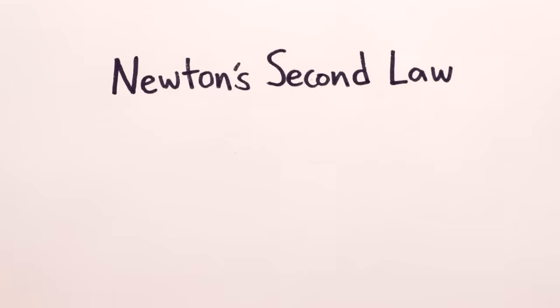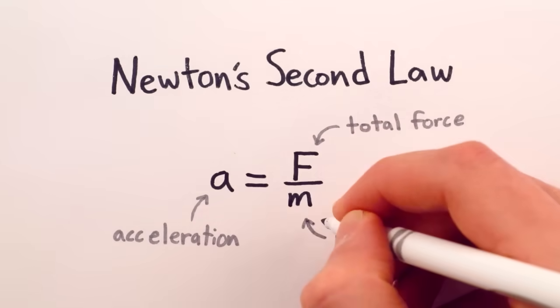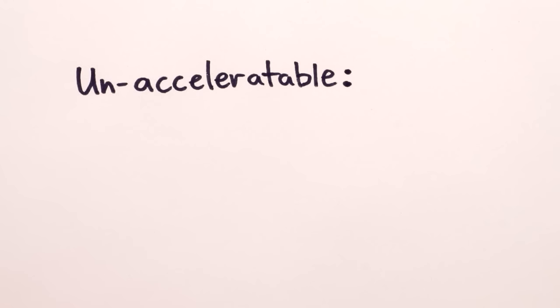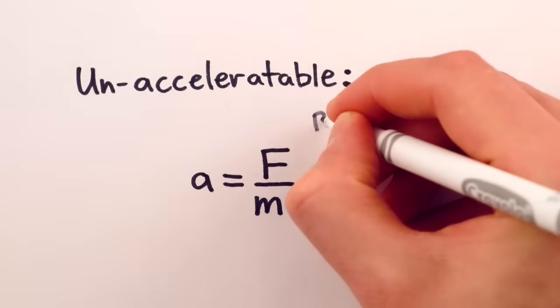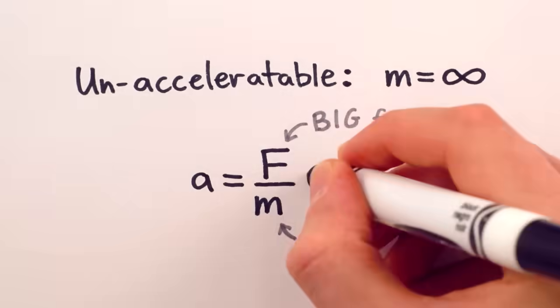Using Newton's second law, we know that an object's acceleration is equal to the total force on it divided by its mass, though you've probably seen this as F equals MA. So an unacceleratable object would be an object with infinite mass, an object so massive that no matter how big the total force F is, when you divide F by M, you always get zero.